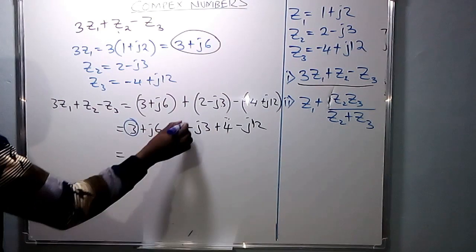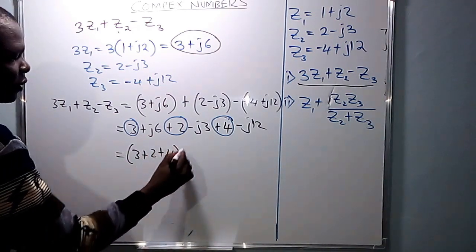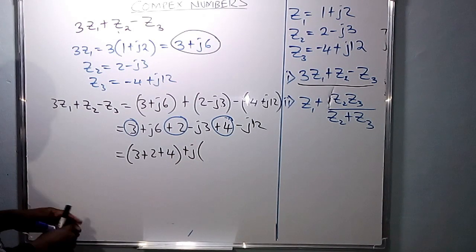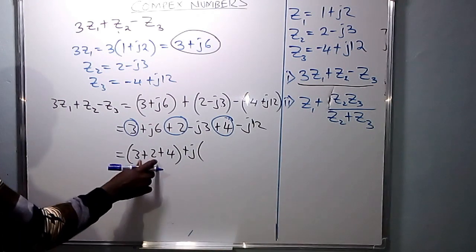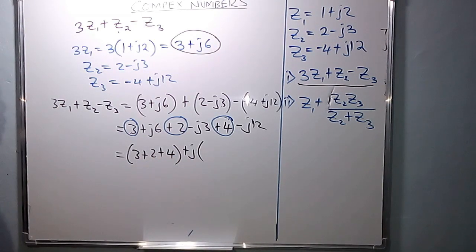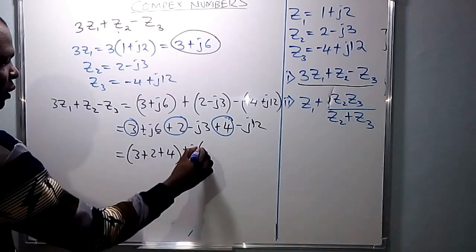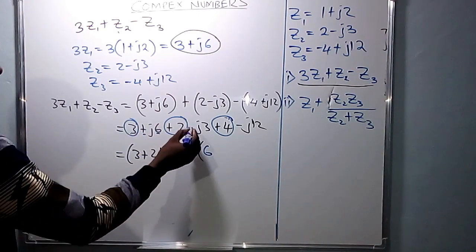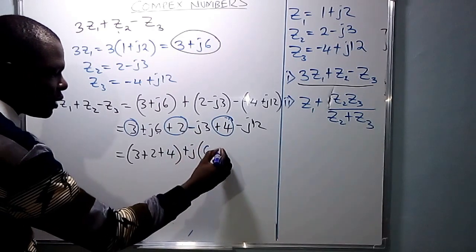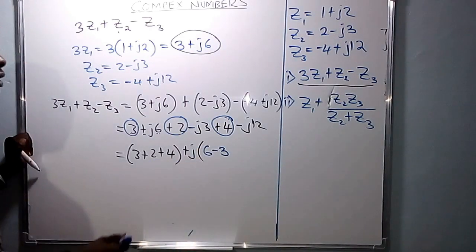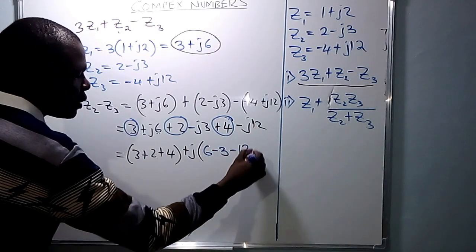Collect the real terms on their own and the imaginary terms on their own, since it is in the form X plus jY. The real terms — those without j — are 3, positive 2, and positive 4. Then plus j times the coefficients of j inside the bracket: the first coefficient is positive 6, the next is negative 3, and the last is negative 12.